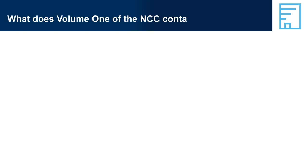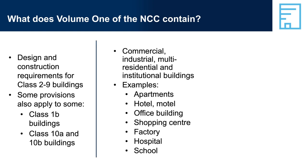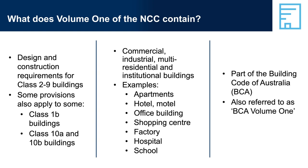What does Volume 1 of the NCC contain? The focus in NCC Volume 1 is on requirements for multi-residential, commercial, industrial and public institutional buildings. The provisions within NCC Volume 1 that apply to Class 1 and Class 10 buildings generally relate to access for people with disability. NCC Volume 1 is sometimes referred to as the BCA Volume 1. NCC Volume 2 is often referred to as BCA Volume 2 or the Housing Provisions. NCC Volume 3 is often referred to as the Plumbing Code of Australia or PCA.